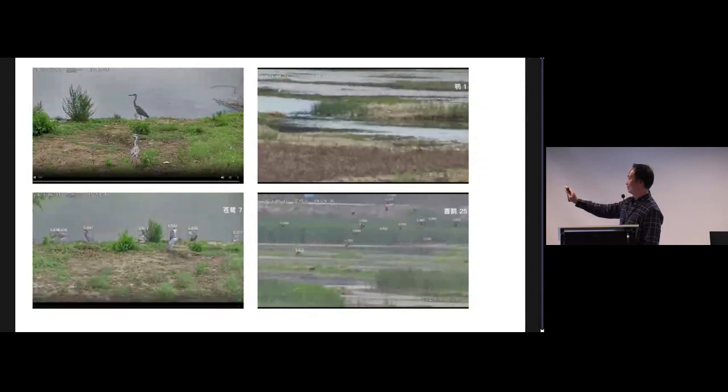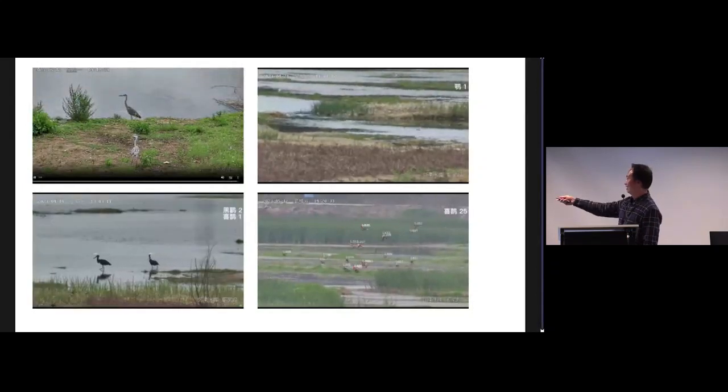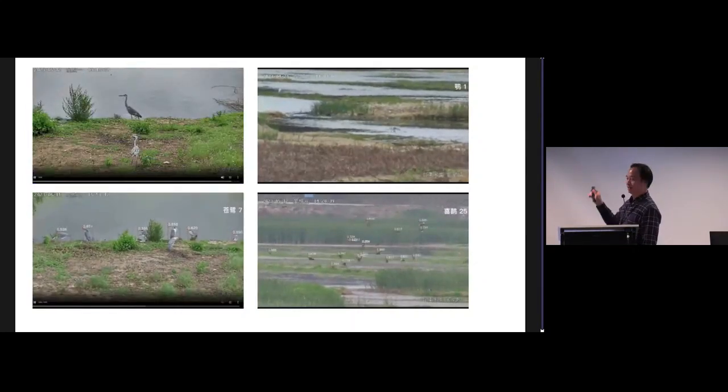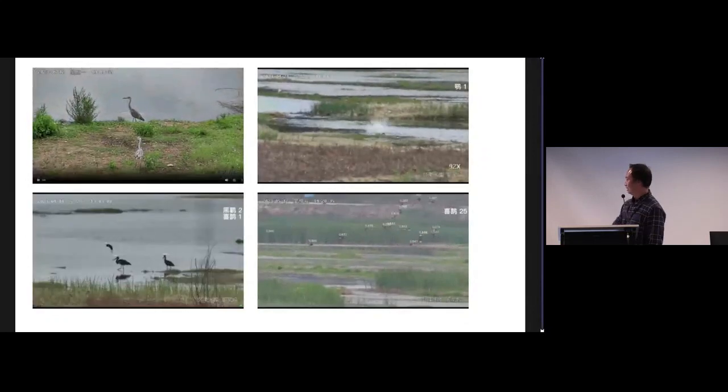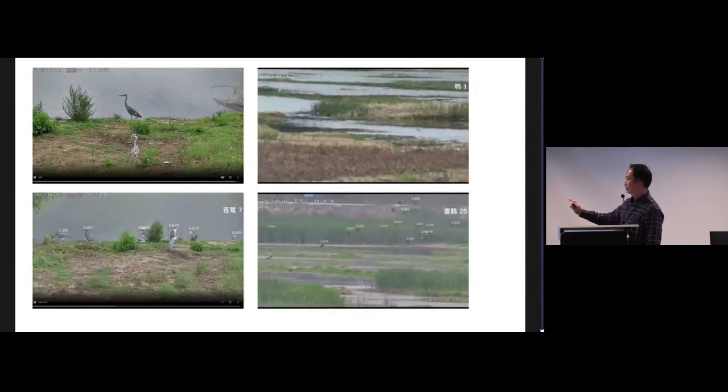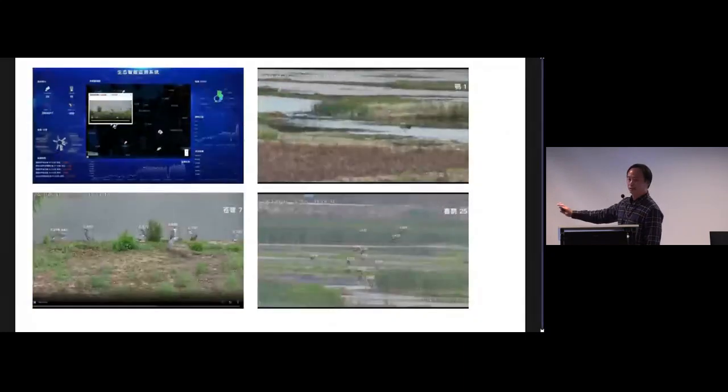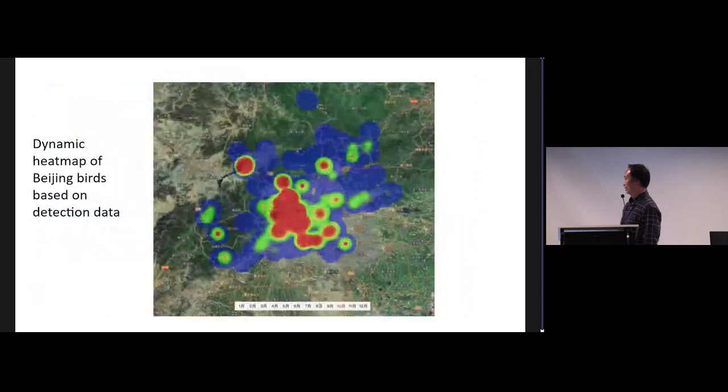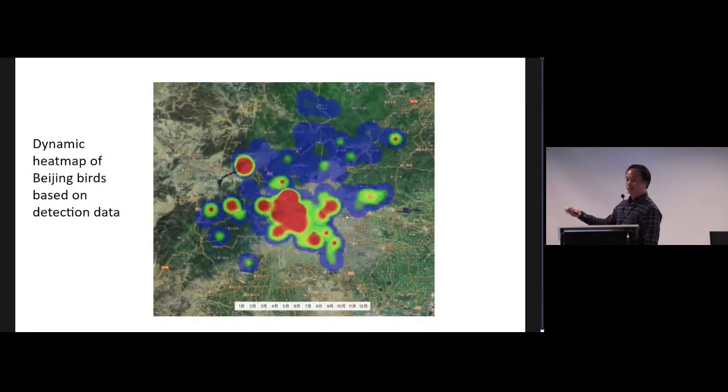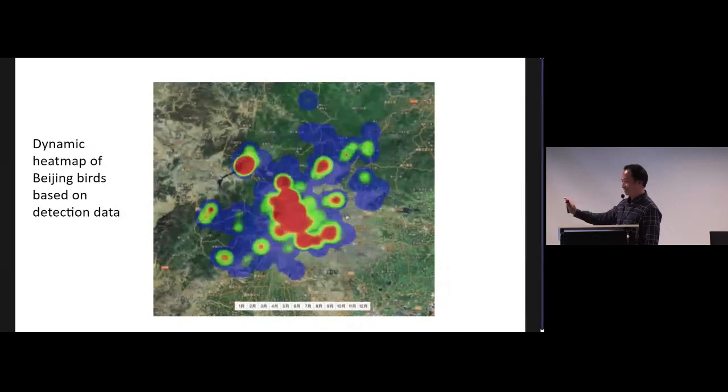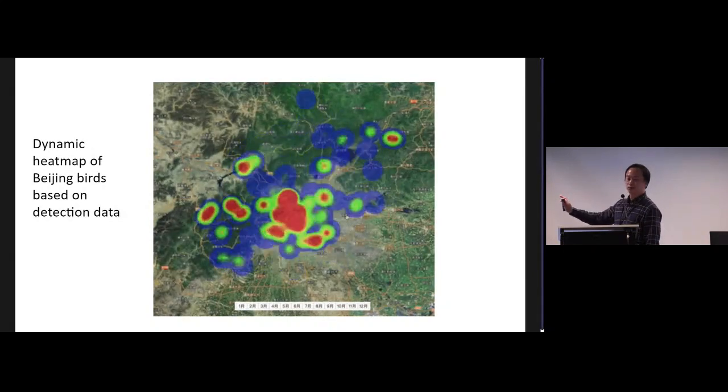This shows some interesting video. This one is a fast-moving bird catching a fish. In this video, we can see that many individuals are caught and recognized, and we can count how many individuals are in the video. Based on the detection data, we can create a dynamic heat map and aging maps. It compiles not just the detection data but also citizen science data.